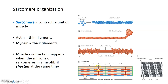Muscle contraction is basically a concerted contraction of millions of sarcomeres within myofibrils at the same time — a shortening of these sarcomeres, with Z-disc coming closer to Z-disc. Each sarcomere gets shorter and shorter, all at the same time, and that's what leads to muscle contraction.